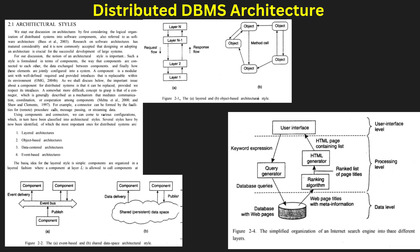In a centralized architecture, all database components are managed by a single central server, which is not scalable. In a client-server architecture, clients send requests to a central database server for processing, improving efficiency. In a peer-to-peer architecture, each node has equal authority, making it fully decentralized and resilient. Another classification is based on autonomy: tightly coupled systems share control over data, while loosely coupled systems allow each database to operate independently. Middleware database architecture integrates different DBMS types for flexibility.